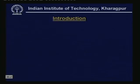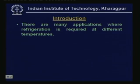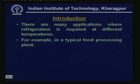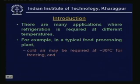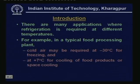There are many applications where refrigeration is required at different temperatures. For example, in a typical food processing plant, cold air may be required at minus 30°C for freezing and cold air is also required at plus 7°C for cooling of food products or space cooling. Another application is in the domestic refrigerator, where you require about minus 20°C for frozen food storage and about plus 5°C for fresh food storage.